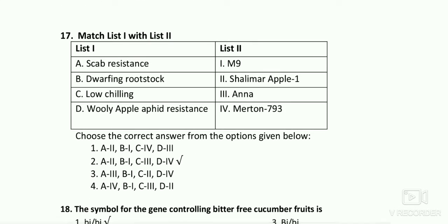Matching for apple: scab resistant — Shalimar Apple 1; dwarfing rootstock — M9; low chilling — Anna; woolly apple aphid resistant — Malling 793. So the second option is right.